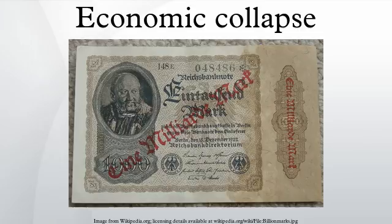Economists, however, tend to attribute Hitler's rise to the deflation and the Great Depression beginning in 1929. Paul Krugman concluded that the 1923 hyperinflation did not bring Hitler to power — it was the subsequent deflation and depression. Before 1929, the Nazi Party was actually in decline, with less than 3% of votes in the German federal election of 1928.